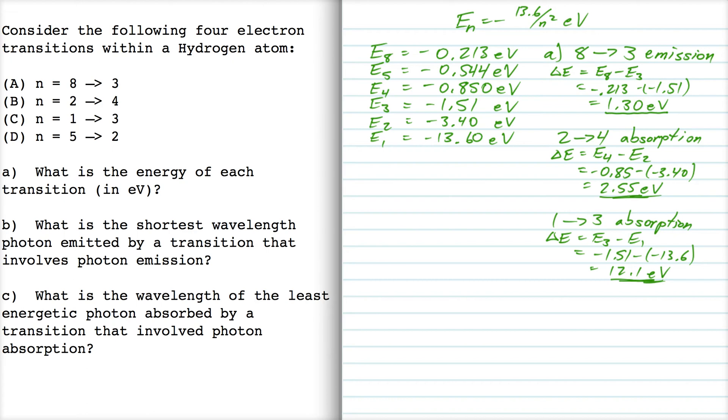And then the final transition is from level 5 to level 2. Since we're dropping the electron down, that's going to be emission of a photon. Delta E is going to be E5 minus E2, which is negative 0.544 minus negative 3.40. So that is 2.86 eV. So there's the energy of each transition, so I'm done with part A.